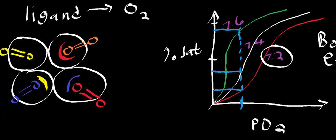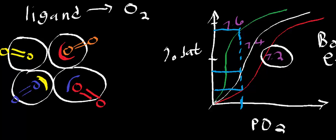One important thing to understand about cooperativity: in the case of hemoglobin, it's positive cooperativity, meaning binding of the first oxygen makes it more likely for the next one to bind. Whenever you have a cooperative relationship, you end up generating a sigmoidal curve. When we get to enzyme kinetics, we'll see that non-cooperative systems tend to have a hyperbolic curve, while allosteric or cooperative systems tend to have a sigmoidal curve.